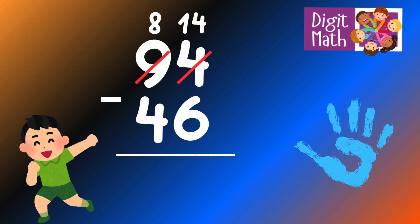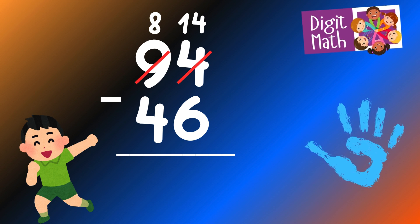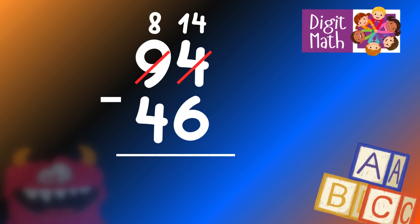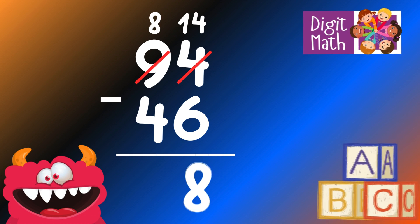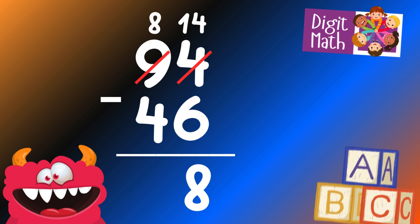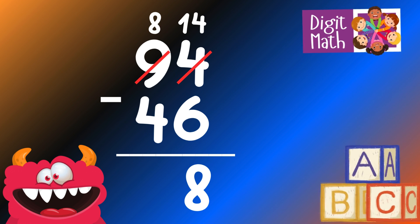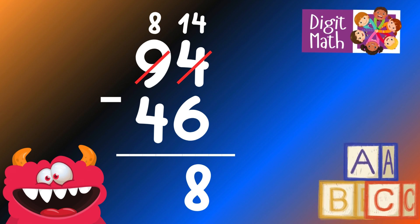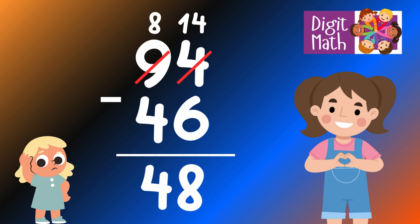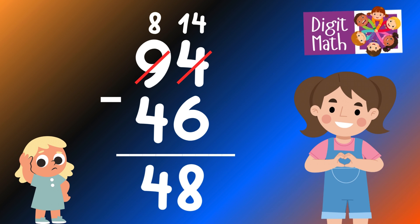Now we have 14 in the Units column. Subtract 6 from 14. In the Tens column, we now have 8. Subtract 4 from 8, which equals 4. So the final result is 94 minus 46 equals 48.